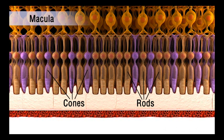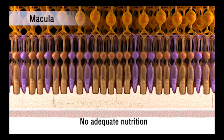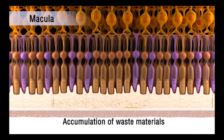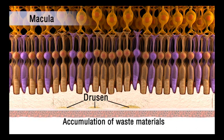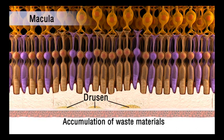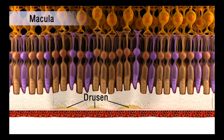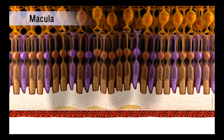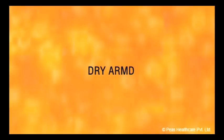In people with ARMD, the rods and cones do not get adequate nutrition and do not clear waste materials. As a result, tiny abnormal deposits called drusen develop under the retina. Gradually, rods and cones degenerate, stop working and finally die. This is the dry type of ARMD.